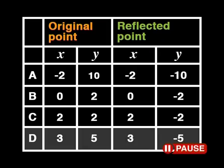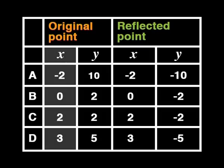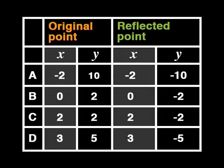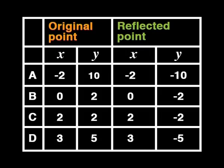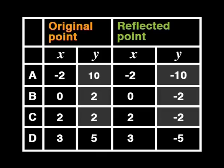You predicted the y-value of the reflected point D correctly. Can you explain how you arrived at this result? I noticed that the x-values of the original points and of the reflected points are exactly the same. But the y-values have changed only their signs. The 10 has become minus 10, 2 has become minus 2, and so on.